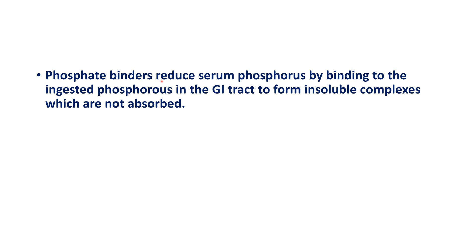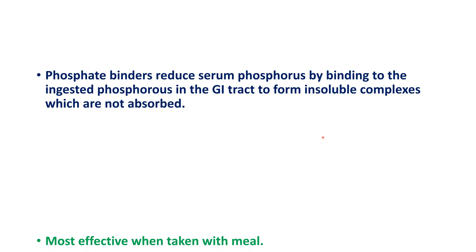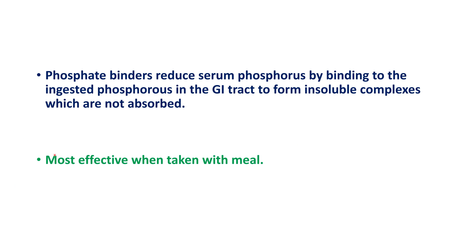Phosphate binders reduce serum phosphorus by binding to the ingested phosphorus in the GI tract to form insoluble complexes which are not absorbed from the GI tract. They are most effective when they are taken with the meal.